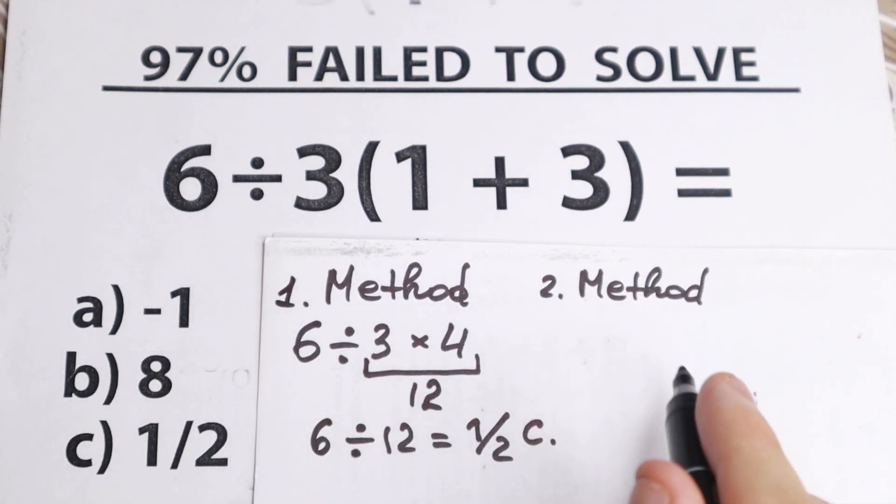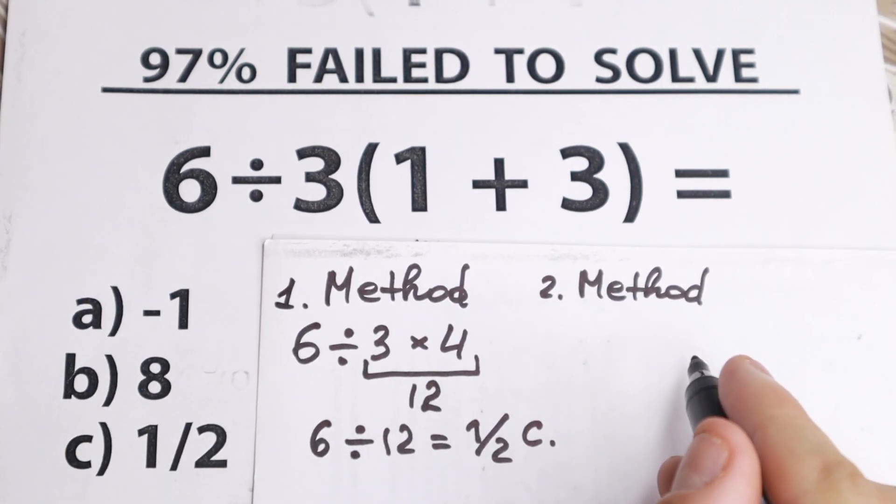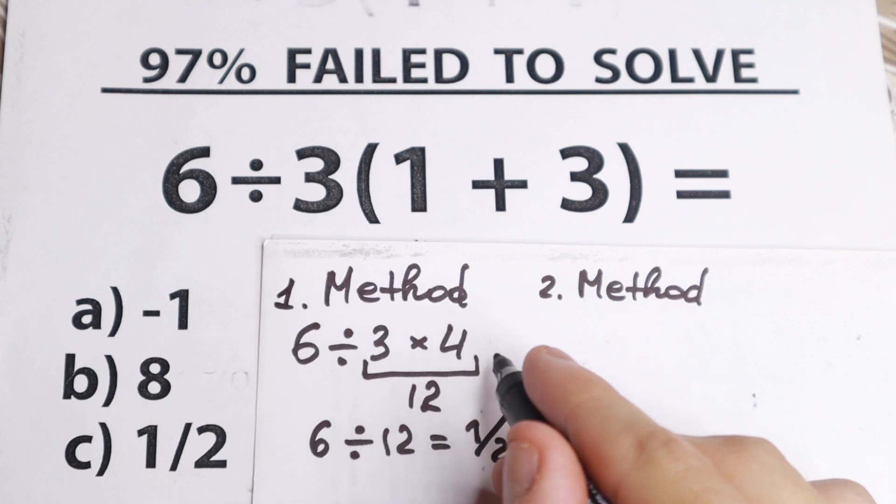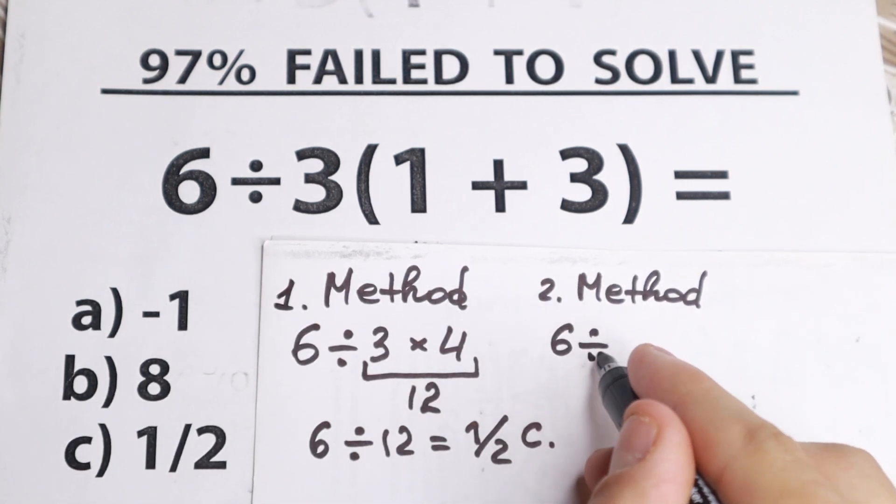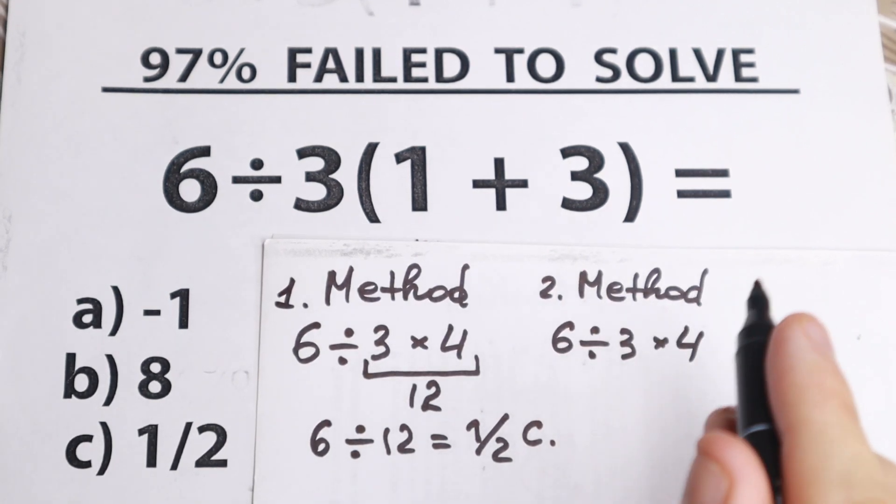We have second method. As well, we start with parentheses right here. 1 plus 3 equals 4. So we have 6 divided by 3 times 4. We still have the same.